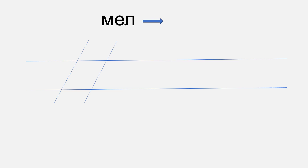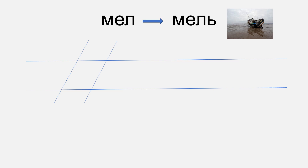Let's take a look at how the soft sign changes words. You remember the word мел — we used it in lesson five. Мел means a piece of chalk. Now watch: I will dramatically change the meaning of this word by adding a soft sign at the end. Now I have мель — the letter л is no longer hard, it's soft. Мел versus мель: мель is a spot in a river or ocean where the bottom is very high, so a ship may get stuck there. In English we call it a shallow.